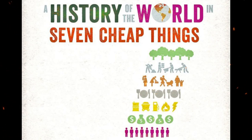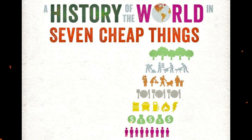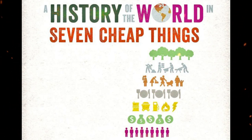In other words, the mass production of chicken carcasses is a feature of what the authors call the Capitolocene era — the period in which the activities of capitalism are leaving a permanent trace in the geological record.